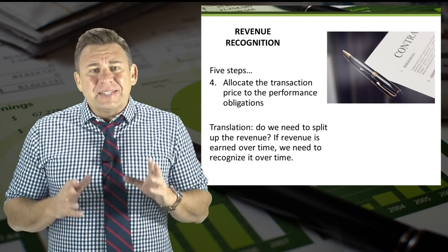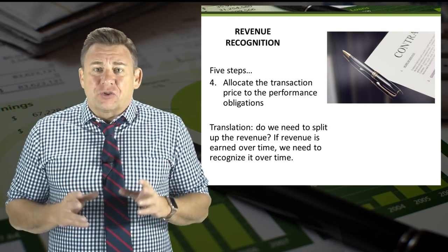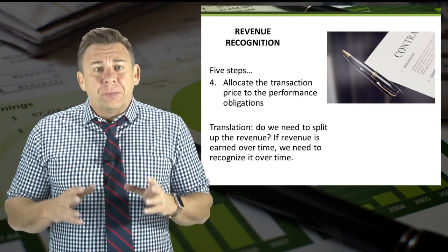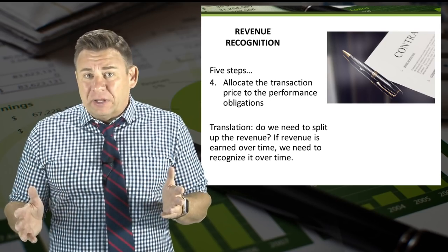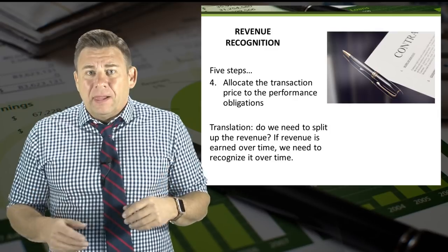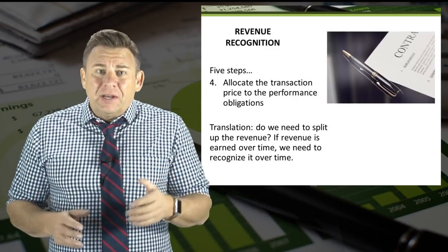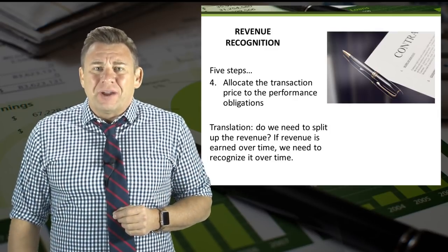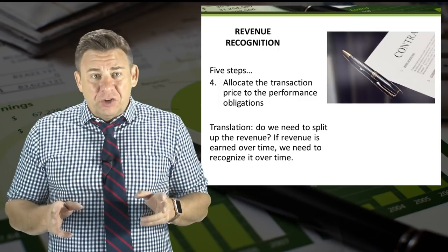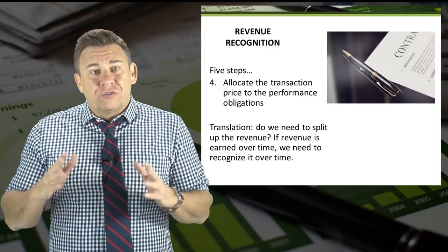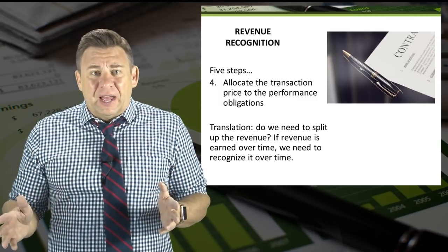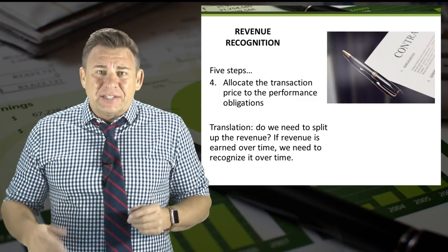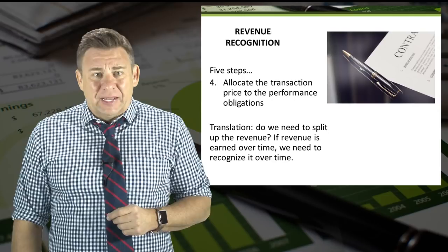Step four is allocate the transaction price to the performance obligation, meaning do we need to split up the revenue? If the revenue is earned over a period of time, we need to recognize it over that time.